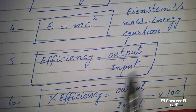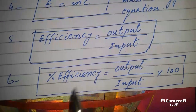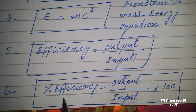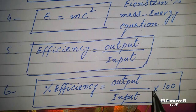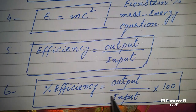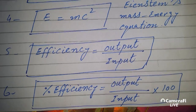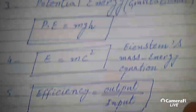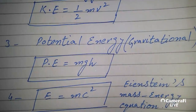Next we have percentage efficiency: output divided by input, multiplied by 100. These are very important formulas.